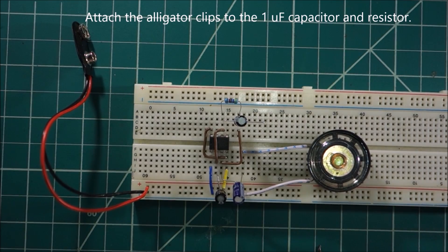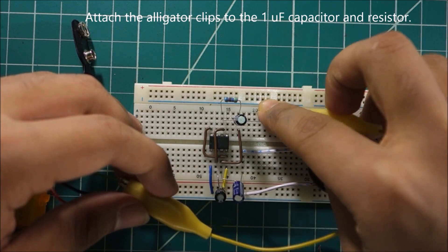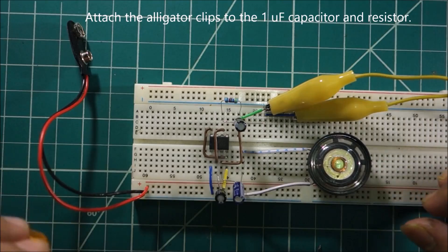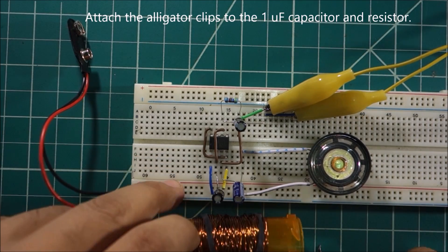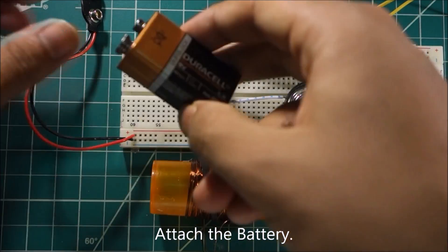Attach alligator clips to the one UF capacitor and resistor. And the circuit is done.